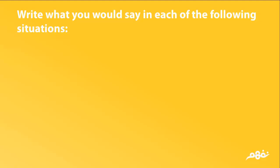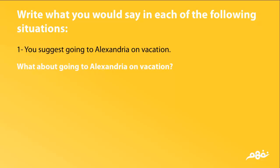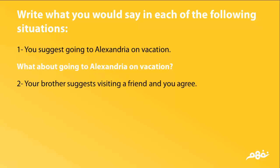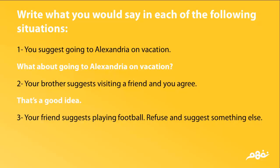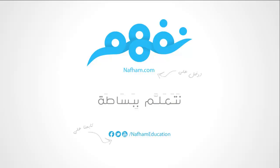Now it's time for questions. Write what you would say in each of the following situations. One: you suggest going to Alexandria on vacation — 'What about going to Alexandria on vacation?' Two: your brother suggests visiting a friend and you agree — 'That's a good idea.' Three: your friend suggests playing football; refuse and suggest something else — 'I'm not very keen on that. How about listening to some music?' Thanks for listening with Nafham — learn easily and simply.